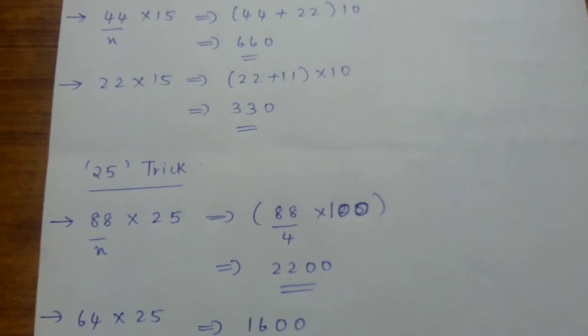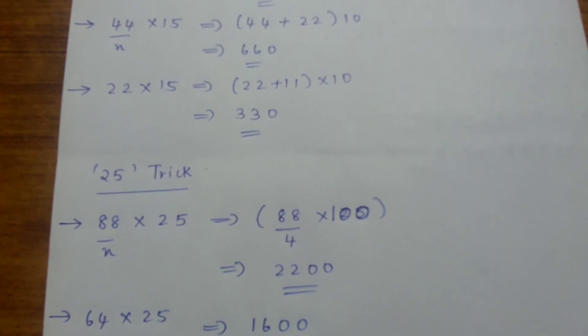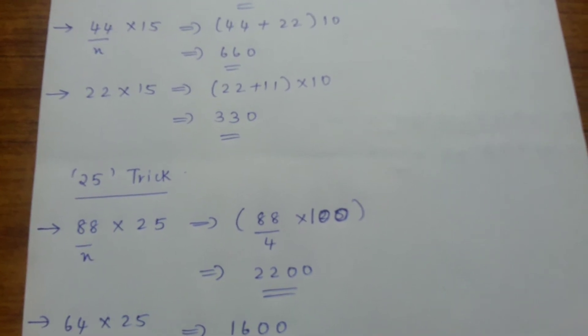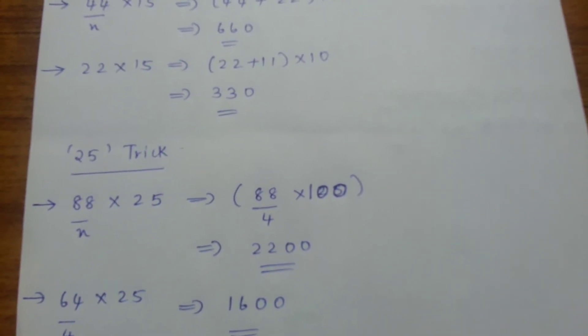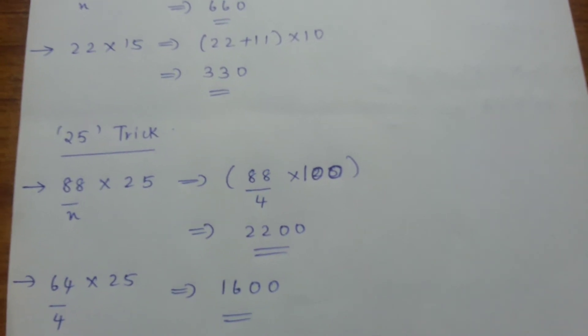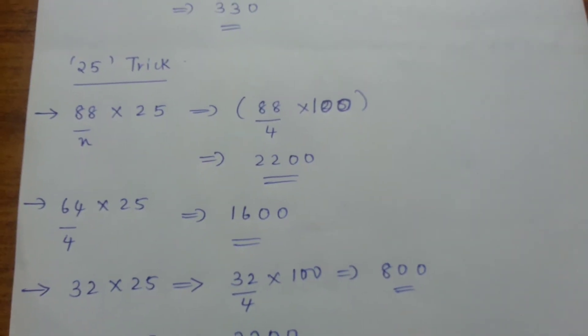The 25 trick is the left number is divided by 4 and then multiplied with 100. That is 88 by 4 into 100, which is 2200. 64 divided by 4 is 16 times 2 zeros, 1600. Another example, 32 into 25, that is 32 divided by 4, 8, 2 zeros, 800.